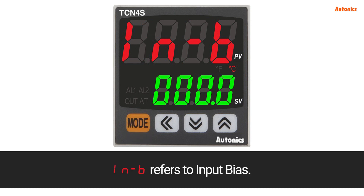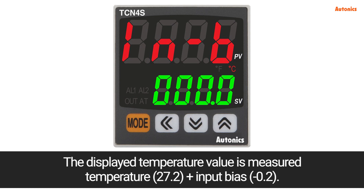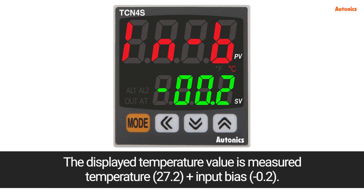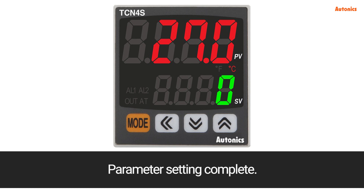IN-B refers to input bias. The displayed temperature value is the measured temperature — for example, 27.2 degrees — plus the input bias value, such as minus 0.2. Hold the mode key for 3 seconds to return to run mode. Parameter setting complete.